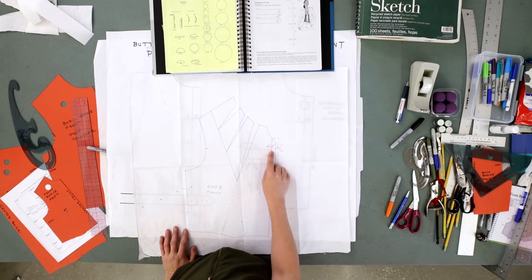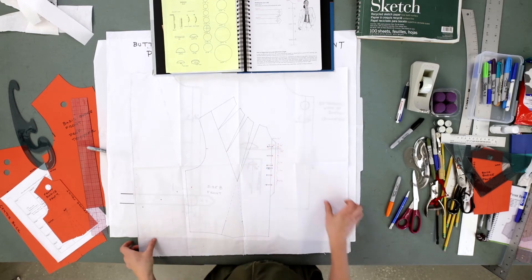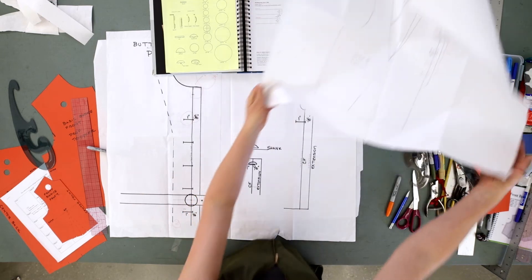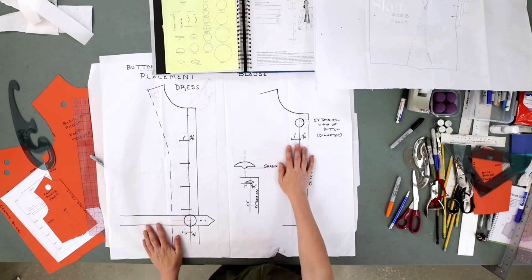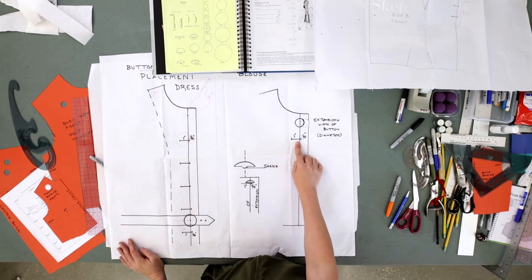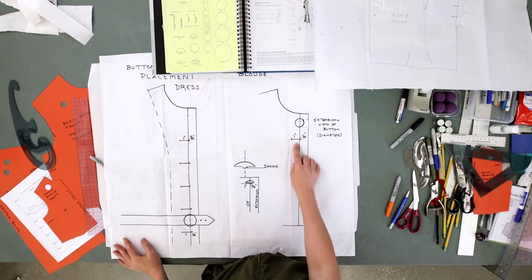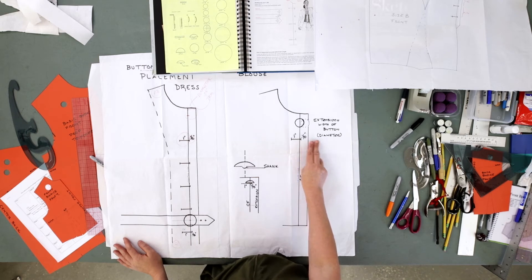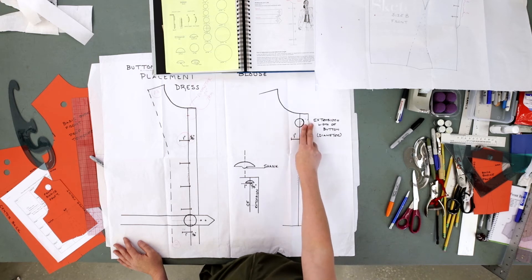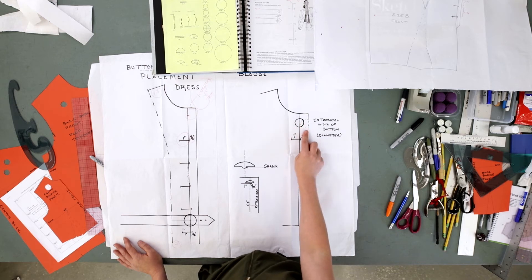The extension is always going to be the full width of that button plus one-eighth of an inch. What do I mean by that? If I have a one-inch button, a 40-line button basically, I need to add a one-inch extension. I need the button to be the width of the diameter, the extension to be the width of that button. The button will sit on the center front when the garment is closed, but I need to allow that much extra.